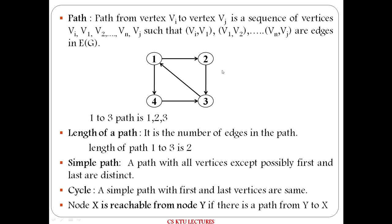Then, what is a path? For a path from vertex 2 to vertex 4 to exist, it must use edges and vertices. For example: 2 → 3 → 1 → 4 is a path from 2 to 4.